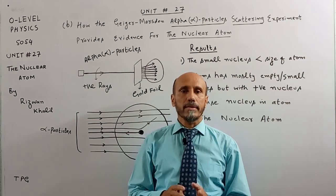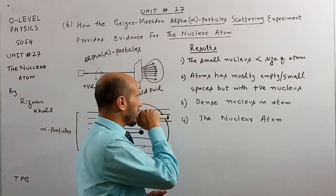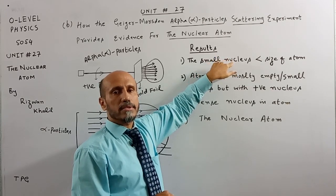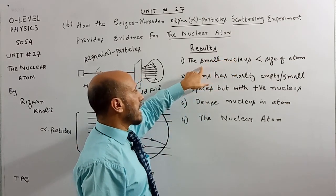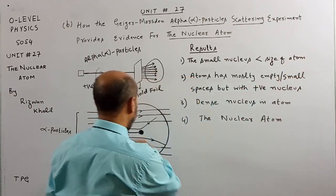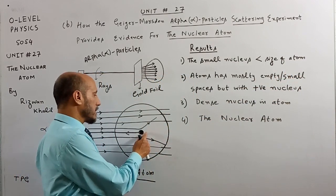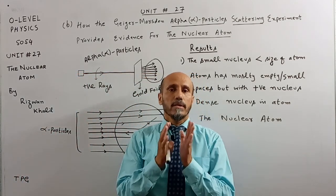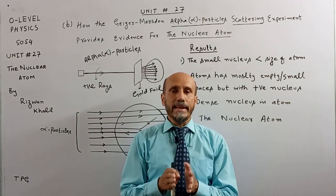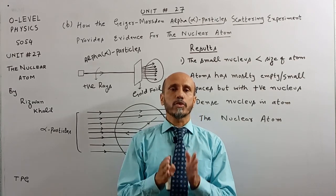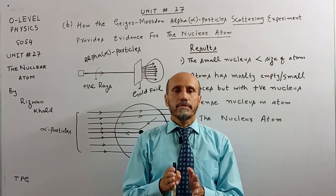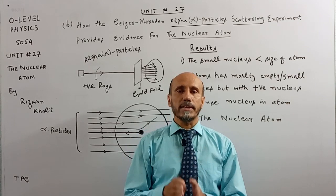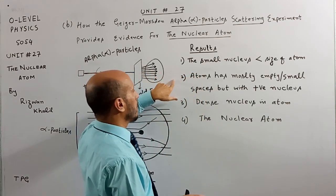From this experiment they concluded that there exists a small nucleus inside the atom. The size of the nucleus is very small - smaller than the size of the atom. This is clear from the diagram. Most alpha rays were unscattered, traveling as they were originally thrown. This led to conclusion number two: the atom consists of mostly empty spaces, because most alpha rays traveled in a straight line undeflected.